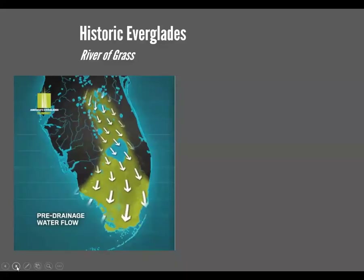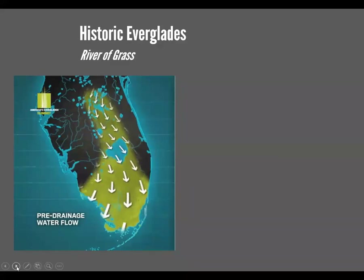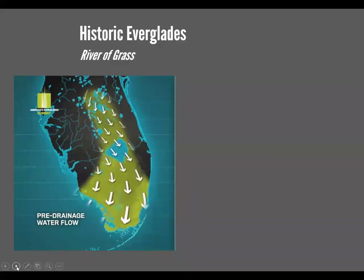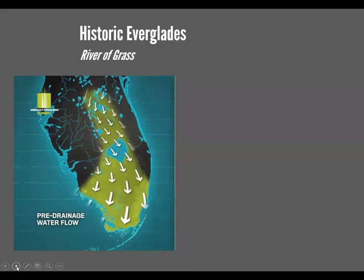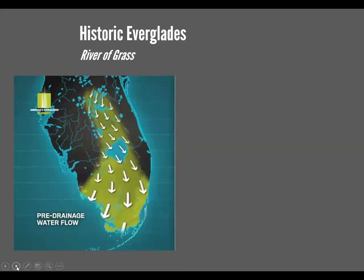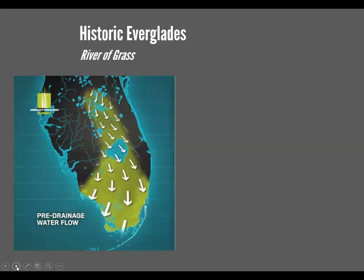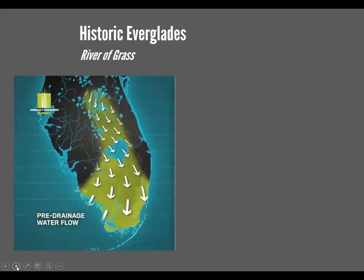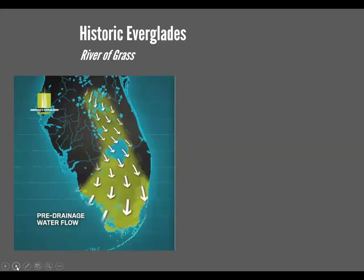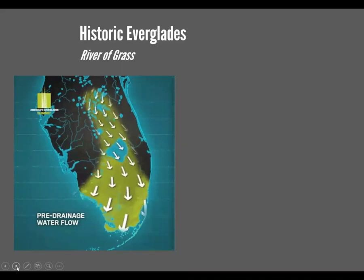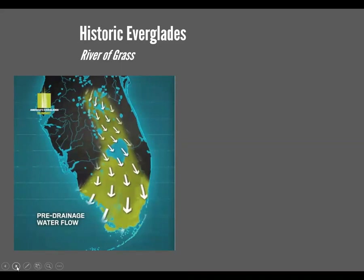Historically, the Everglades pre-human involvement during the wet season, which typically is during the summer here in Florida, the Kissimmee chain of lakes in the central Florida area would essentially fill up. And eventually, if it was wet enough, those lakes would overflow through the creeks and rivers in the central part of Florida into Lake Okeechobee and eventually down the peninsula into South Florida and out into the Gulf of Mexico and Florida Bay.